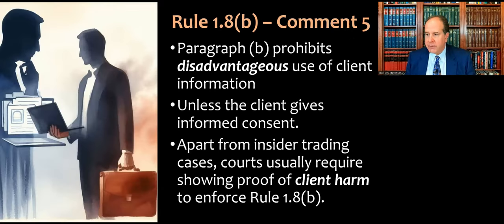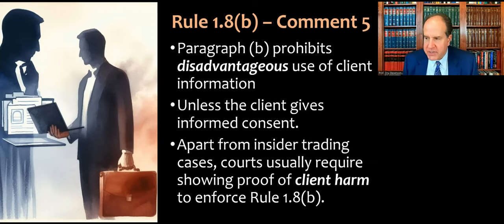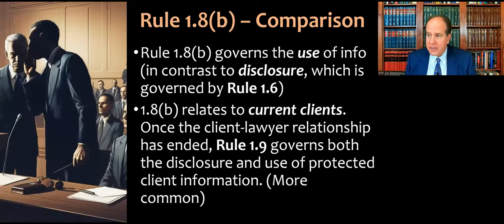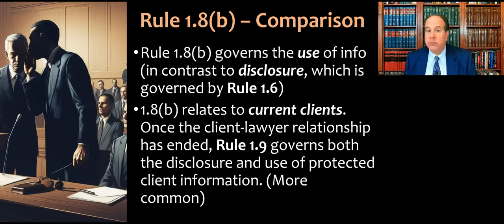Comment 5 notes that paragraph b prohibits disadvantageous use of client information unless the client gives informed consent. Because of this, courts usually require showing proof of client harm in order to enforce Rule 1.8b as a disciplinary rule — if it is not to the disadvantage of the client, the lawyer is not subject to discipline. Compare this with Rule 1.6: Rule 1.8b governs the use of information, in contrast to disclosure, which is governed by Rule 1.6. The phrase in the rule is 'use the information,' which is distinct from whether you actually reveal it to others.